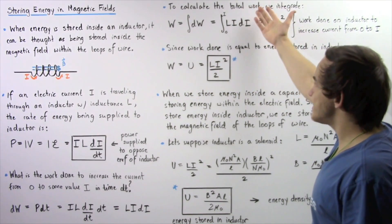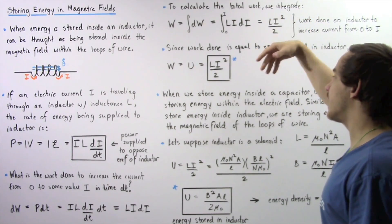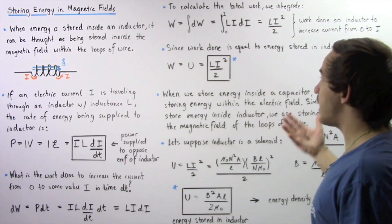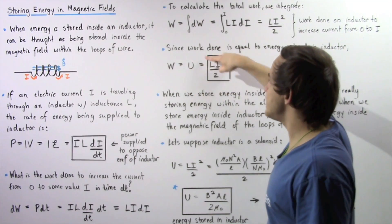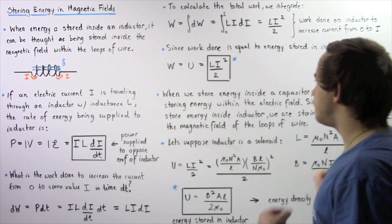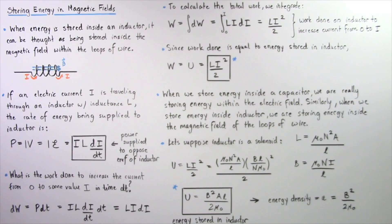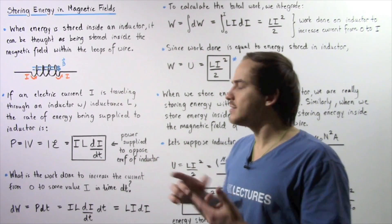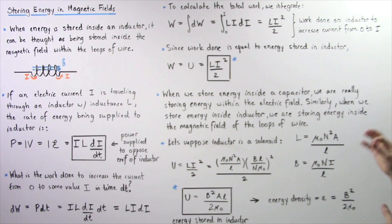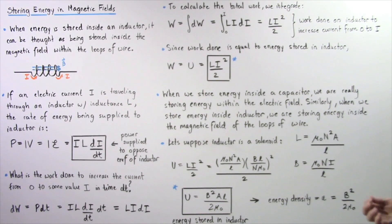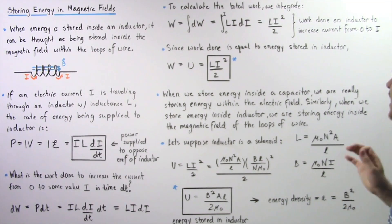If we increase our electric current by a factor of two, we increase our stored energy by a factor of four. When we store energy inside a capacitor, we are really storing energy inside the electric field between the plates. Similarly, when we store energy inside an inductor, we are storing energy inside the magnetic field of the loops found within the wire of our inductor.